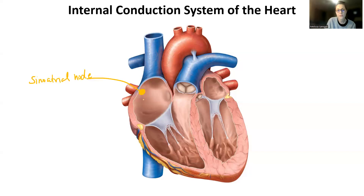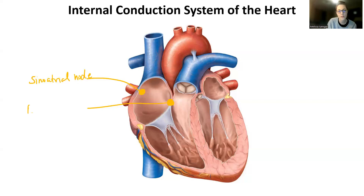The sinoatrial node is connected to some non-contractile cells. The next really large cluster of non-contractile cells is found in the interatrial septum — it's very difficult to label on this picture, so most textbooks place it roughly here. That next set of non-contractile cells is called the atrioventricular node, sometimes referred to as the AV node.